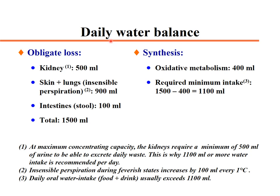Regarding daily water balance: there is an obligatory water loss through the kidney. The kidney produces about 600 milliosmol of metabolic substances daily. Considering the kidney's maximum concentrating capability of about 1200 milliosmol per liter, these 600 milliosmol particles can be excreted in 500 ml of urine.